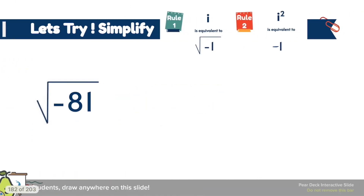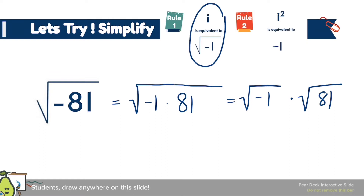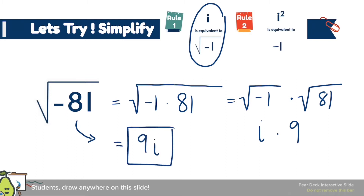Let's try simplifying √(-81). I'm going to break this down into two numbers: negative 1 and 81, each under their own square root. Then I use rule 1 — since i = √(-1) — I write i, and on the other side the √81 = 9. So the simplified answer is 9i.